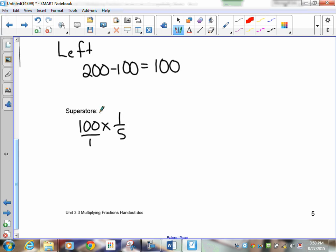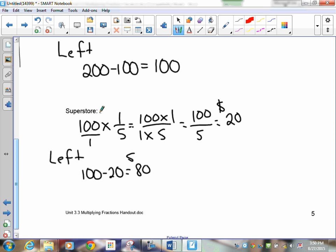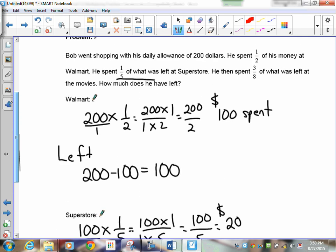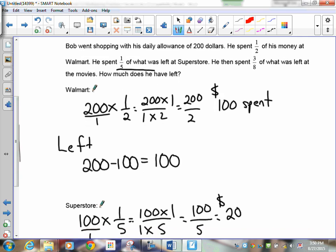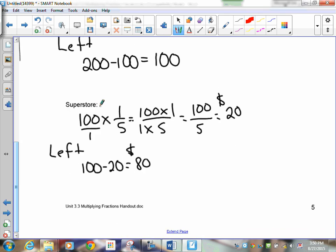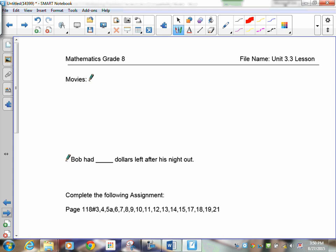That's what he spent. Now, that means how much does he have left? Well, he had $200. Take away the 100 he spent means we now have $100 left. Now, he takes that $100 and he goes to Superstore. And he's going to spend one-fifth of it. So, I need to find 100 times one-fifth. Remember, 100 is over 1. So, this is 100 times 1 over 1 times 5. That's 100 over 5, which is $20. So, he spends $20. What does he have left? Well, he had 100, take away 20, he's now at $80 left.